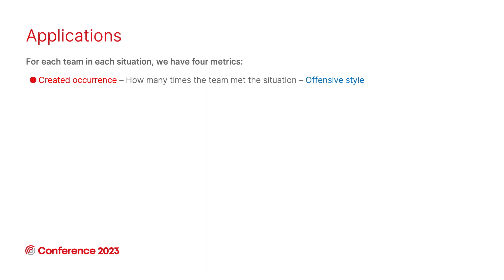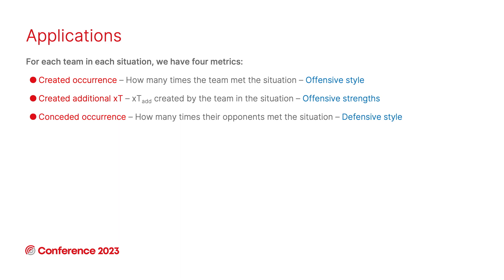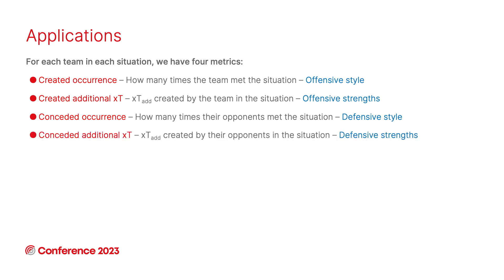The first metric is created occurrence: how many times the team encountered each situation when in attack — this indicates their offensive style. The second is created additional expected threat: the xT difference created by the team in each situation when in attack, indicating their offensive strength. The third is considered occurrence: how many times the team encountered each situation when in defense, demonstrating their defensive style. The last one is considered xT: the total xT created by their opponents when this team is in defense, demonstrating their defensive strength.